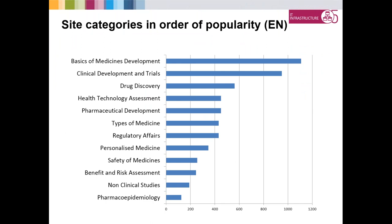Looking at site categories in order of popularity: this is what Google tells us people are searching for. It is important to understand that on the front of the website we have a big box of buttons displaying all of these categories, and 'basics of medicines development' is the very first one. So more testing is required to see whether people are genuinely more interested in that topic or are simply clicking the first button they come across. This is a good example of the type of testing we can do to really drill down to see what people want.